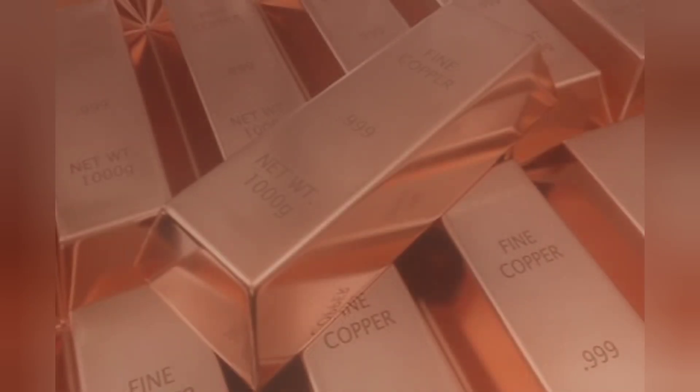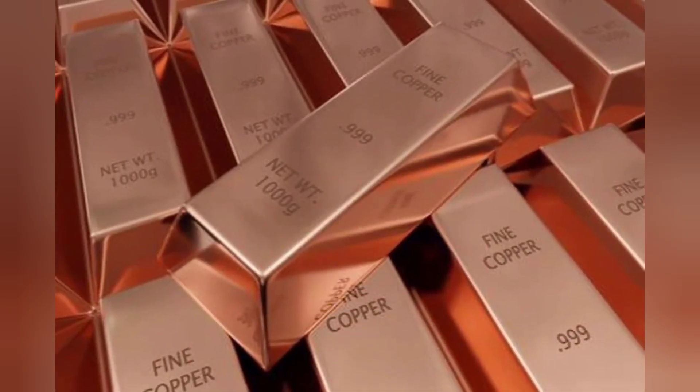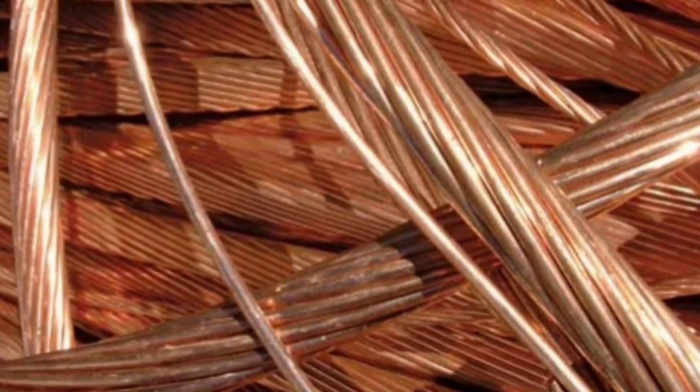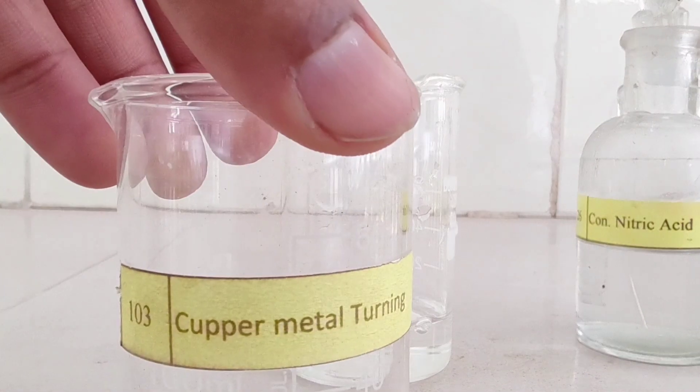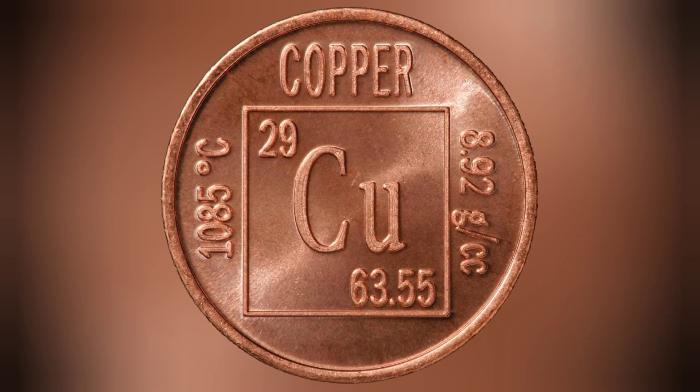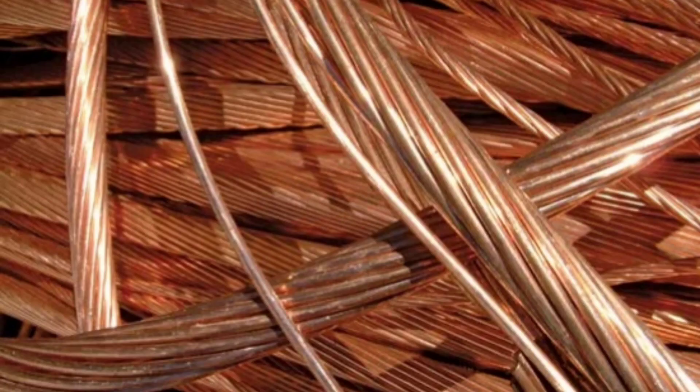Copper is a chemical element with the symbol Cu and Latin name Cuprum, and atomic number 29. It is a soft, malleable, and ductile metal with very high thermal and electrical conductivity. Copper is a reddish-brown metal, widely used in plumbing and electrical wiring.